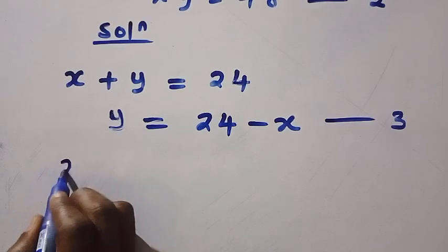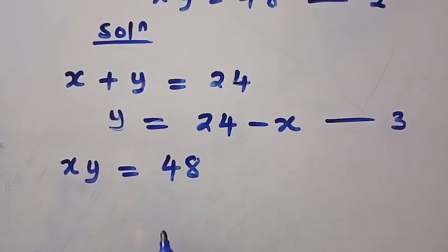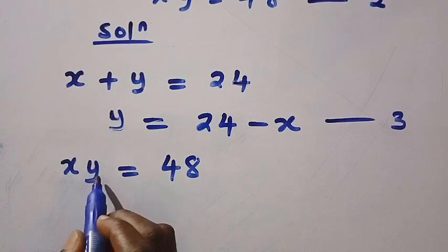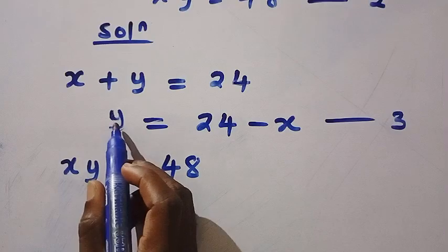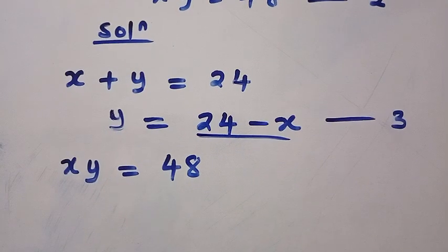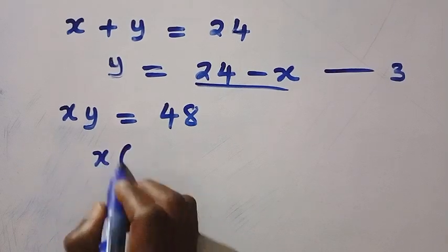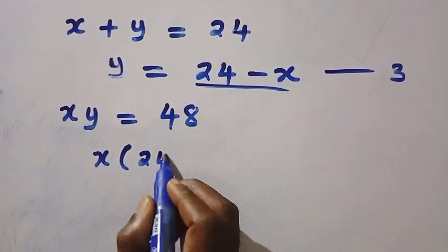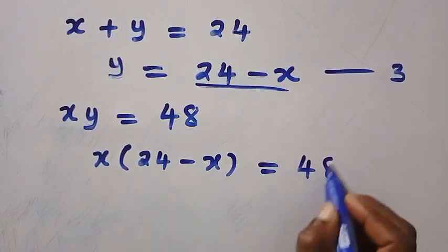Then from equation 2, which is X Y equals 48, anywhere we see Y in equation 2, we replace it with 24 minus X. By doing that, we are going to have X bracket (24 minus X) equals 48.